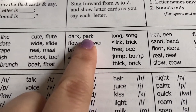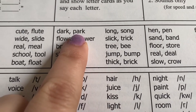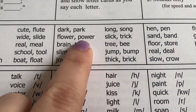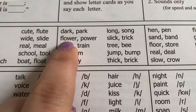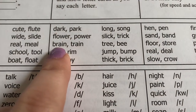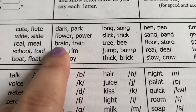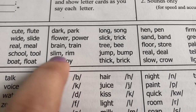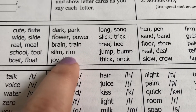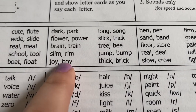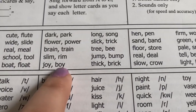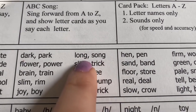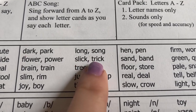Dark Park. And your child says Dark Park. Flower Power. Brain Train. Slim Rim. Joy Boy. Long Song. Slick Trick.